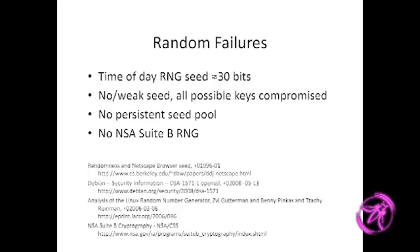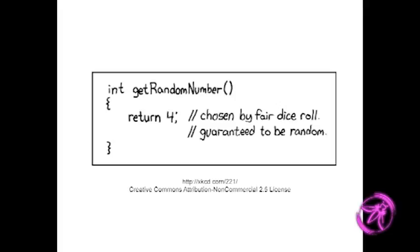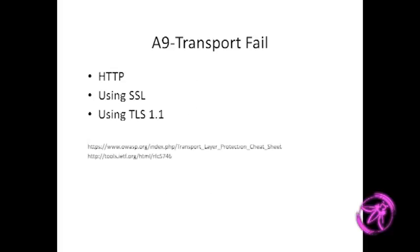Random number generators are not well standardized. NSA Suite B — an up-and-coming suite of cipher algorithms that are otherwise well chosen — has no specified RNG. One common failure: a value might have been random once, but it's now static and not per-instance, and probably way too small. An HTTP transport fail affects both confidentiality and integrity, since HTTP has no integrity option built in — though you can add your own layers on top.